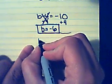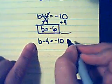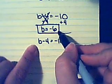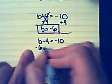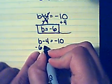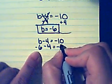My original equation was b minus four equals negative ten. But now that I know that b is negative six, I can plug that in to test it. So negative six minus four equals negative ten.